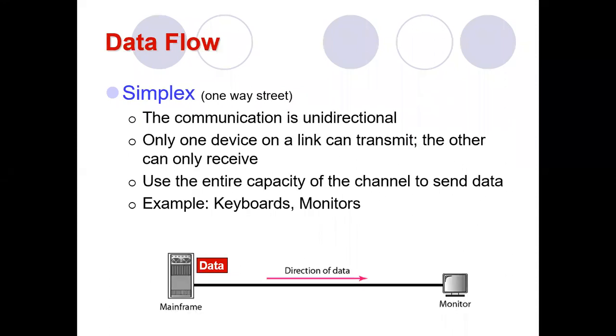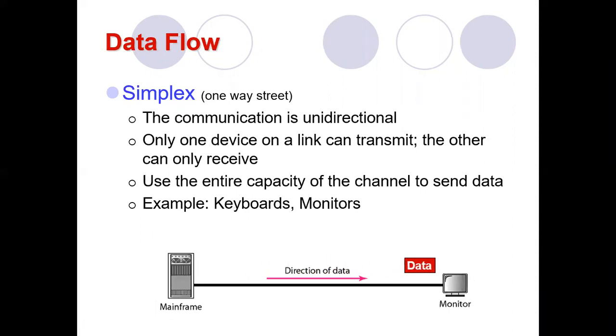Comparing simplex, half duplex, and full duplex can be asked for six marks — explain the data flow between two devices in a communication network. You need to draw a diagram for all three, write three to four points in brief, and give one example each. Each can carry two marks, with one mark for the diagram.